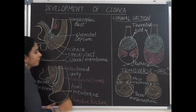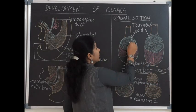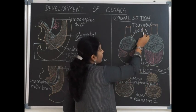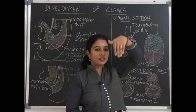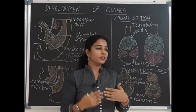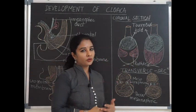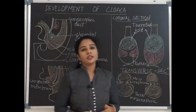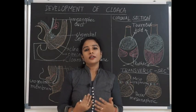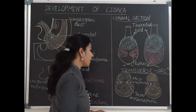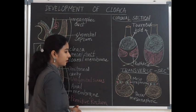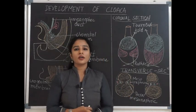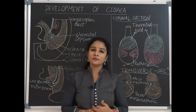In coronal section, the urorectal septum is formed by three components: a vertical band and two lateral folds. The vertical band growing downward is called Tournix's fold, and the two lateral folds are called Rathke's folds. Initially they leave a gap called the cloacal duct, and later the cloacal duct disappears completely by fusion of all three folds. The Rathke's folds arise from the lateral wall of the cloaca and contain two components: the mesonephric duct and the paramesonephric duct. The lateral ones are the mesonephric (Wolffian) duct and the medial ones are the paramesonephric (Müllerian) ducts.